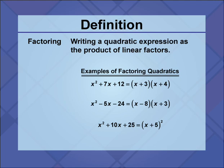The quadratic trinomial x squared plus 7x plus 12 can be factored as the product of two linear binomials x plus 3 and x plus 4.